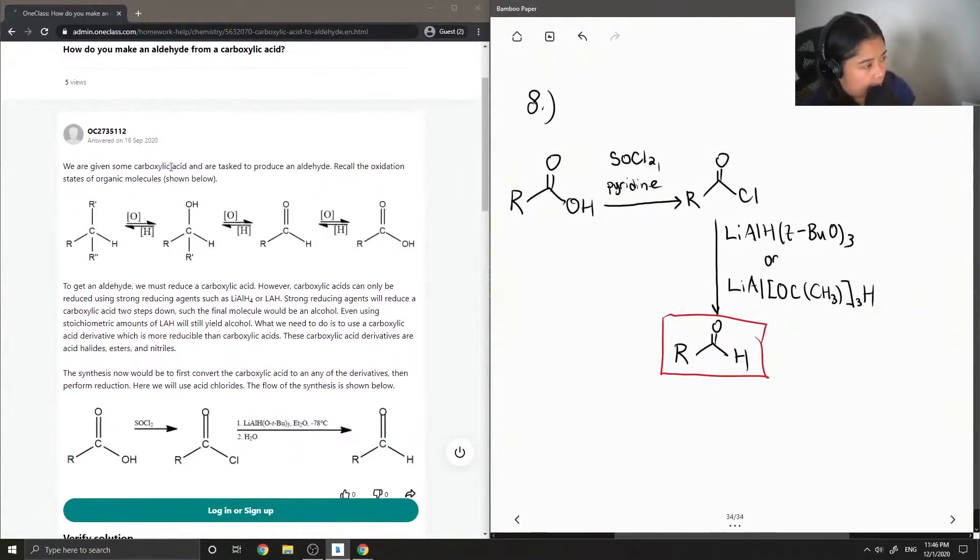We are given some carboxylic acid and are tasked to produce an aldehyde. Recall the oxidation states of organic molecules shown below. So, here they show how you can start off with an alkane, and then you can oxidize it to make an alcohol. This can be oxidized to make an aldehyde, which can be oxidized to make a carboxylic acid. And then, we can go the reverse direction. Carboxylic acid to aldehyde to alcohol to alkane.